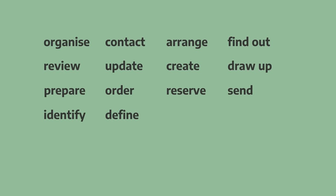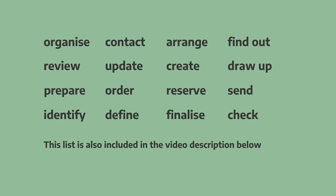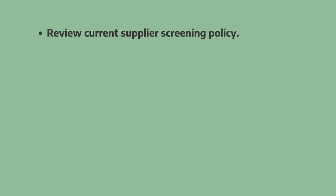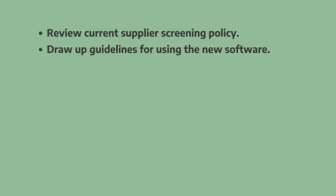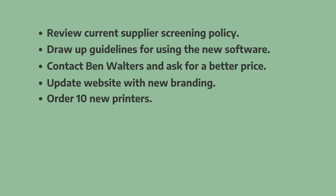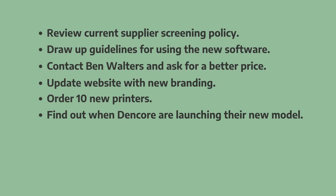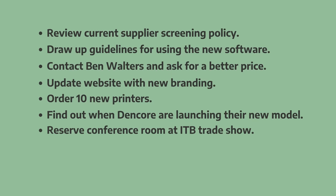Now let's look at how to write the action points. Here are some verbs which are often used in action points — this list is also included in the video description. Example action points: 'Review current supplier screening policy.' 'Draw up guidelines for using the new software.' — To 'draw up' means to prepare and write something such as a document or a plan. 'Contact Ben Walters and ask for a better price.' 'Update website with new branding.' 'Order 10 new printers.' 'Find out when Thencore are launching their new model.' 'Reserve conference room at ITB trade show.' Notice that all action points start with a verb in the infinitive form.